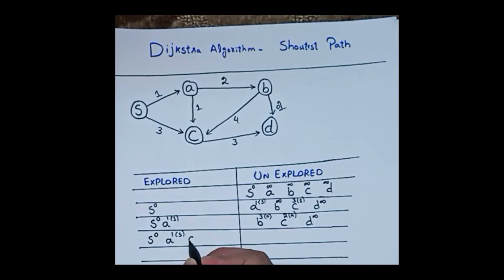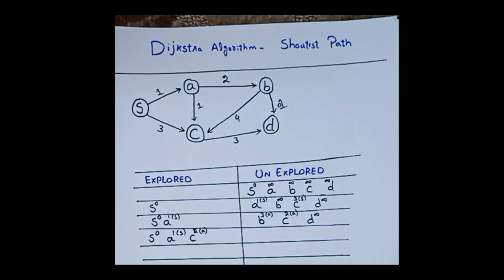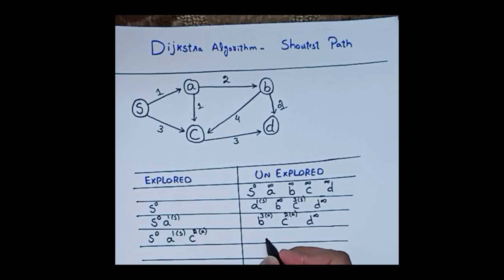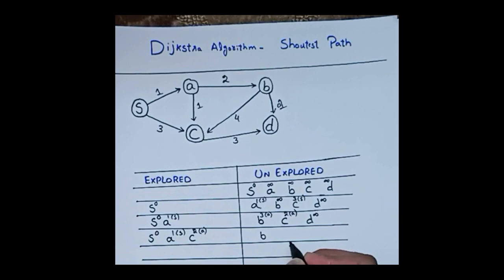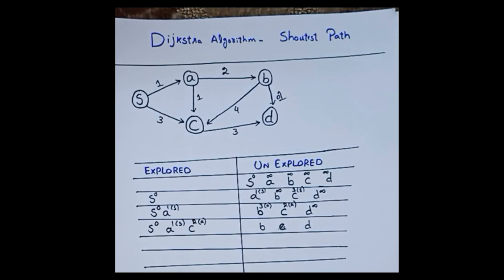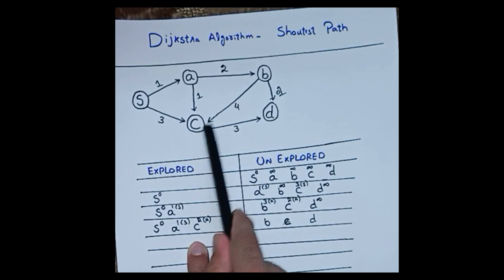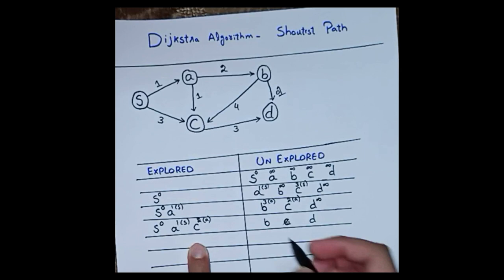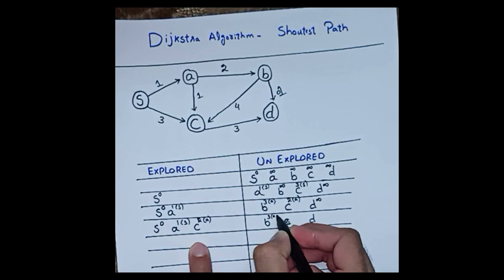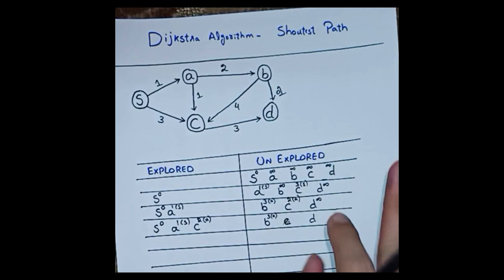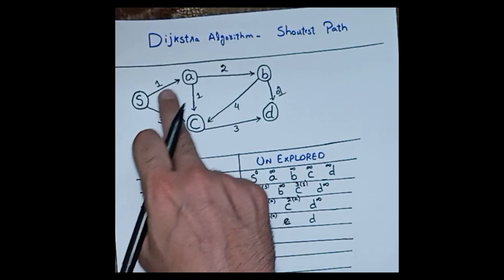C is explored with distance 2 and parent A. Now only B and D remain as unexplored nodes. I am now standing at C. Can I reach B directly from C? No, so I do not change B's distance which stays at 3. That distance of 3 via parent A — through S to A (1) and A to B (2) — is already the minimum, so I leave it.